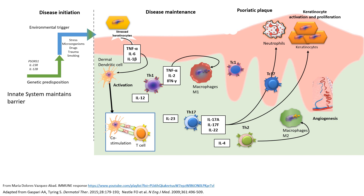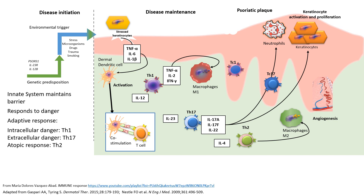In summary, the innate system — which normally maintains barrier integrity — is first to encounter the perceived danger signal in psoriasis. Though the exact trigger is unknown, the innate system activates the adaptive response engaging all three profiles: Th1, Th17, and Th2, while maintaining innate responses involving M1 and M2 macrophages. It also stimulates migration and activation of cytotoxic T cells TC1 and TC17.